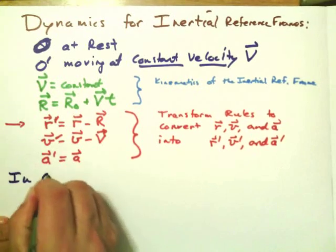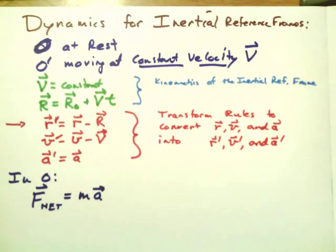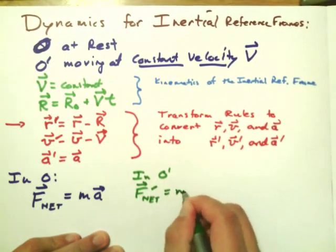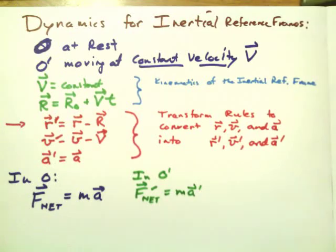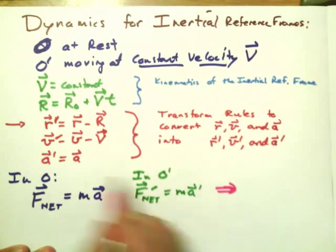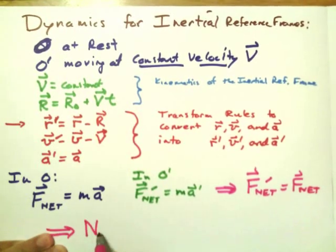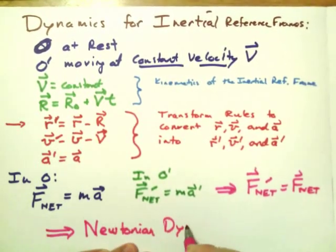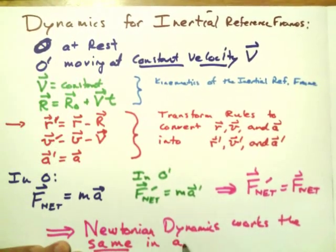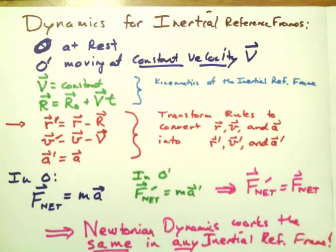In the original reference frame, if I have a kinematic relationship like Newton's second law, I can write down the same expression with primes. Since A-prime equals A, the net force in the prime frame equals the net force in the unprimed frame. In other words, Newtonian dynamics works the same way in every inertial reference frame — a simple consequence of how we define Galilean relativity.